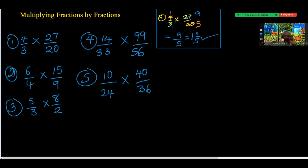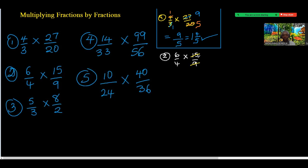Number two: 6 over 4 times 15 over 9. Again we're going to look at both numerator and denominator and see if there is a common factor. 3 can divide 15 and 9, and 3 can also divide 6 and 9. If I choose 15 and 9 and divide them both by 3 — how many 3s in 15 is 5, and how many 3s in 9 is 3.